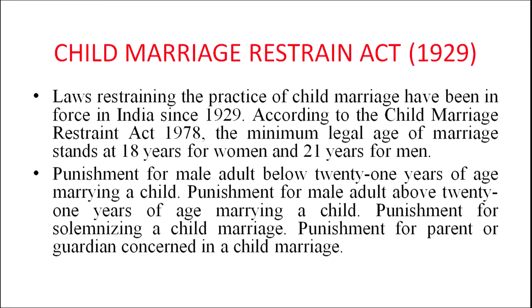The first legal act we would like to discuss is the Child Marriage Restraint Act of 1929. Traditionally, child marriage has been one of the very problematic issues of Indian society, and laws restraining the practice have been enforced in India since 1929. According to the Child Marriage Restraint Act 1978, the minimum legal age of marriage stands at 18 years for women and 21 years for men. Punishment applies to male adults below 21 years, as well as to the parent and guardian concerned in the case of child marriage.